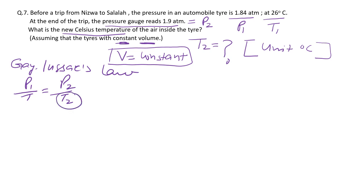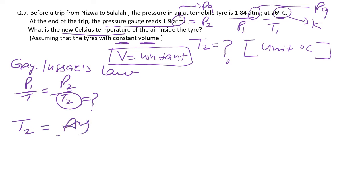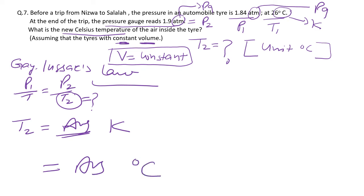Since the volume is constant, use Gay-Lussac's Law: P₁/T₁ = P₂/T₂. First convert atmosphere to Pascal and degrees Celsius to Kelvin. Solve for T₂ in Kelvin, then subtract 273 to convert to degrees Celsius, which is what the question asks for.